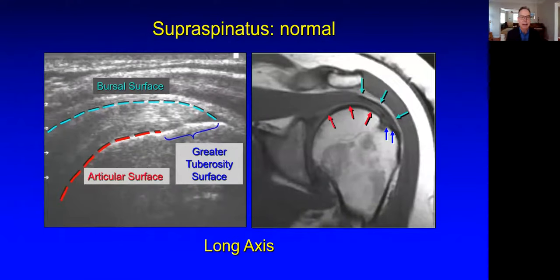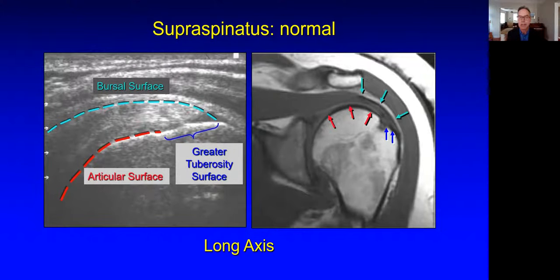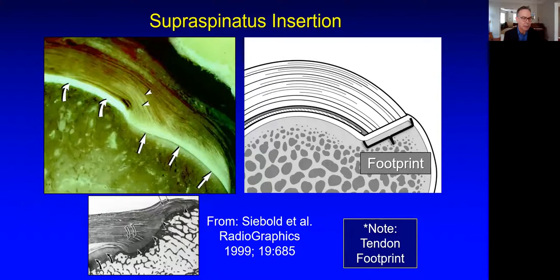One must be aware of the anatomy of the footprint of the supraspinatus by MR and by ultrasound. There are essentially three surfaces: the bursal surface, the articular surface, and the greater tuberosity. There is a broad footprint at the greater tuberosity where the rotator cuff attaches. People have described the footprint as being like a bird's beak, but that's really not true. It's more like a rainbow where you have the bursal fibers attaching at the bursal aspect, the articular fibers at the articular side, and the fibers in between.